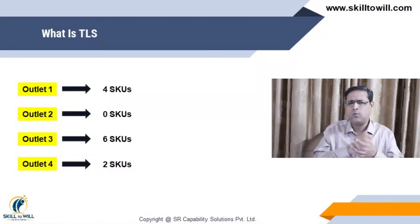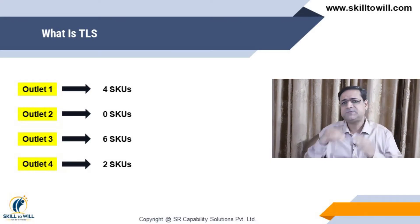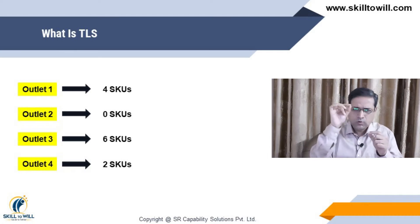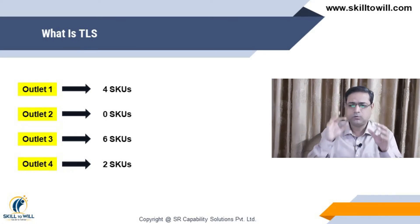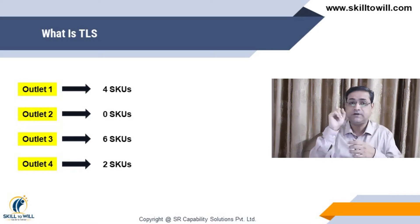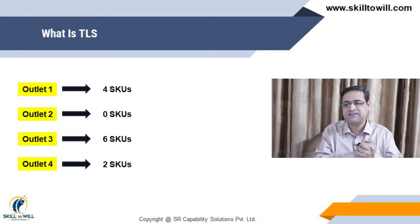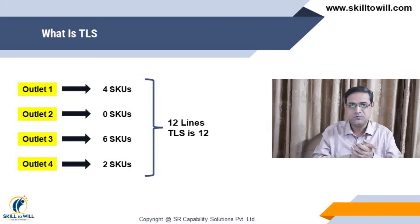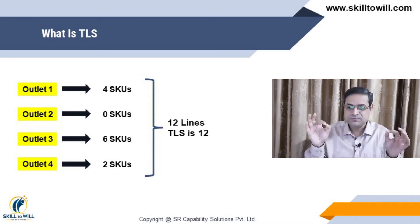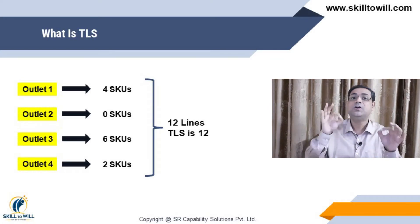Now let me explain TLS, which is also called Total Line Sold. Here you can see an illustration: a salesman went to Outlet 1 which has 4 SKUs, Outlet 2 has 6 SKUs, and Outlet 4 has 2 SKUs. So total line sold after 4 calls is 4 plus 6 plus 2, which equals 12 SKUs. So in this particular case, TLS is 12.